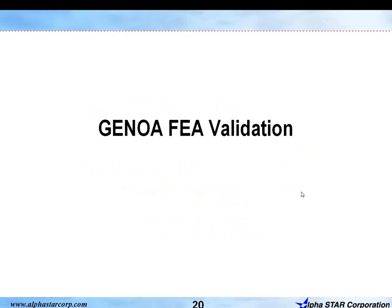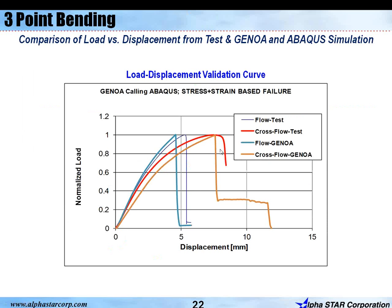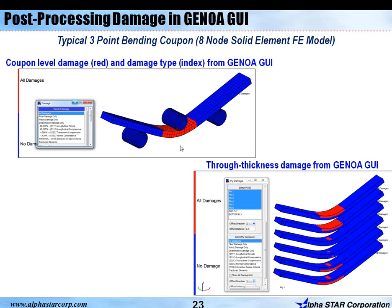Next is GENOA FEA validation for a three-point bending test. Since this test cannot be performed in MCQ Chopped, a finite element model is created to perform the three-point bending test using the MCQ Chopped generated material model. This shows a good comparison between the flow and cross-flow load-displacement curves between test and the GENOA-generated load-displacement curve using the MCQ Chopped material model. This is a detailed progressive failure analysis showing detailed damage — the red is the damaged region and you can go through ply by ply to see what type of damage is occurring, where it occurs, and what percentage is contributing to these different plies.